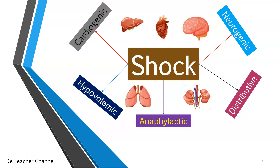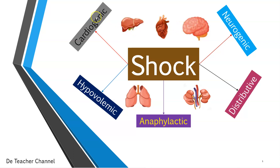You can see some beautiful graphics on screen. Some of these terms sound very big, but don't worry, I'm going to explain them in relation to shock. You can see cardiogenic, hypovolemic, anaphylactic, distributive, and neurogenic. And then you can see some vital organs of the body — the brain, the heart, the liver, the lungs, and kidneys. We're going to see their relationships shortly.